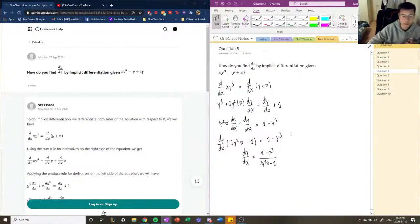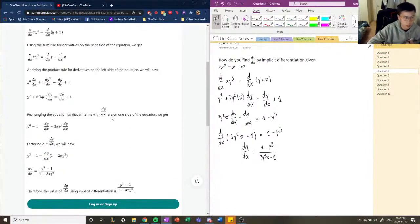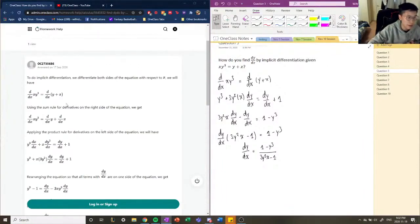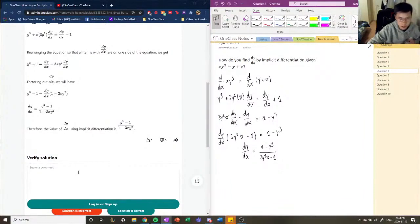So we have now found implicitly differentiated for y in terms of x by doing through this method of implicit differentiation. So the answer is correct.